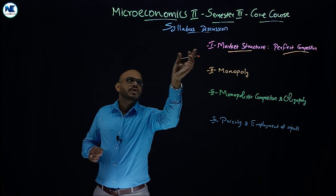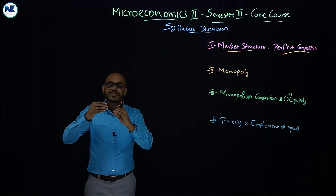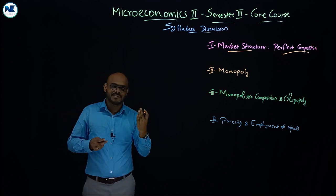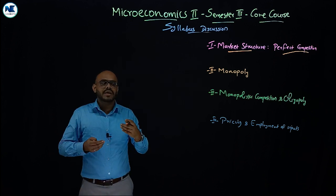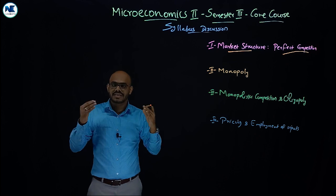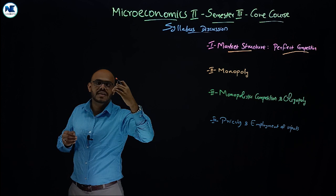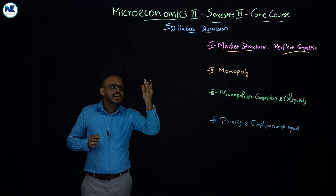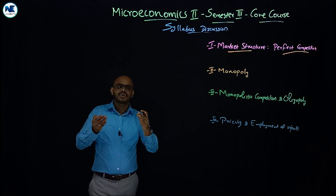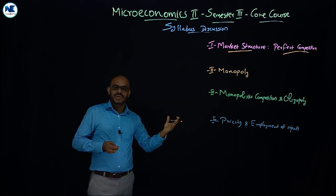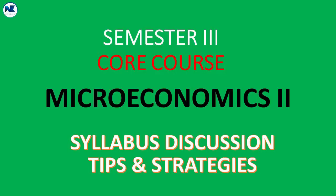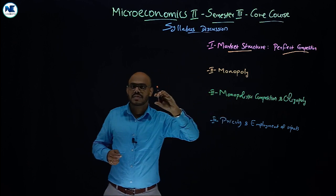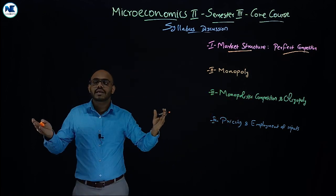Related to the first module, we will focus on the meaning and definition of market. Market is the place where buyers and sellers contact each other to buy and sell goods or services. For example, a gold market is the place where buying and selling of gold takes place. Types of market are based on the number of sellers, number of buyers, nature of product, and entry and exit of firms — whether products are homogeneous or differentiated, and whether there are entry barriers.